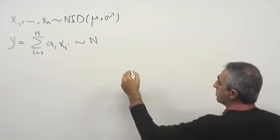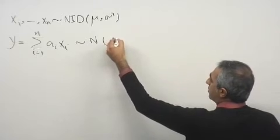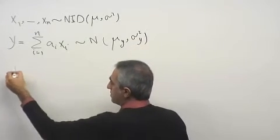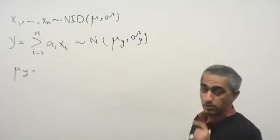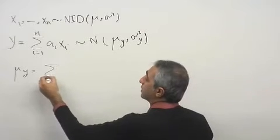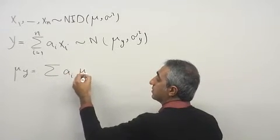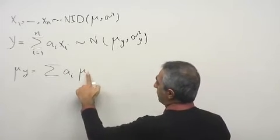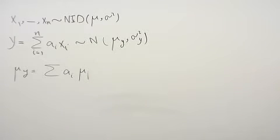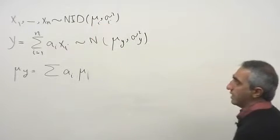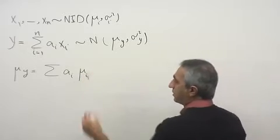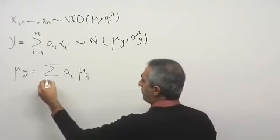It follows a normal distribution with mu_y and sigma squared_y. Mu_y is the same linear combination of the means. If we want to generalize, we can put index i here, so each random variable has its own mean and variance: summation of a_i * mu_i, for i from 1 to n.